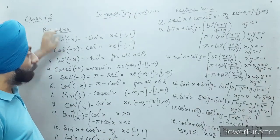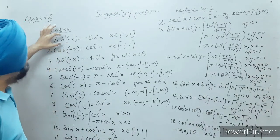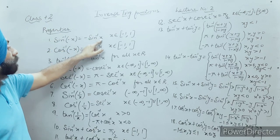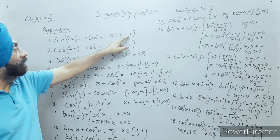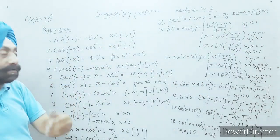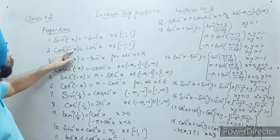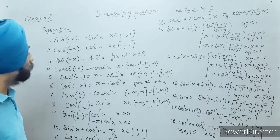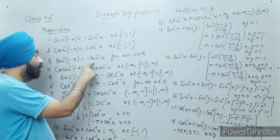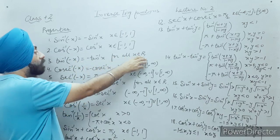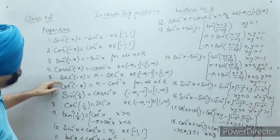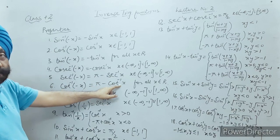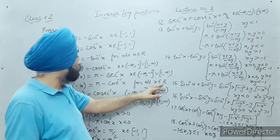A few properties are written about inverse trigonometric functions. Sine inverse of minus x is negative sine inverse x, where x belongs to minus one to one. Similarly, cos inverse of minus x equals pi minus cos inverse x, where x belongs to minus one to one. Tan inverse of minus x is negative tan inverse x for all x belonging to R. And cot inverse of minus x is pi minus cot inverse x for all x belonging to the real numbers.